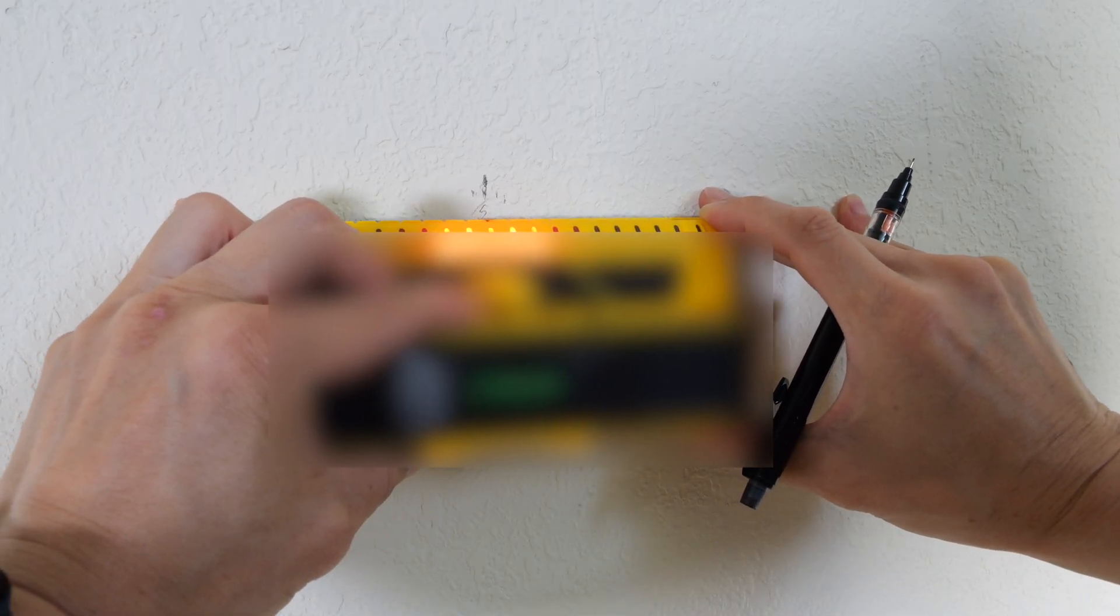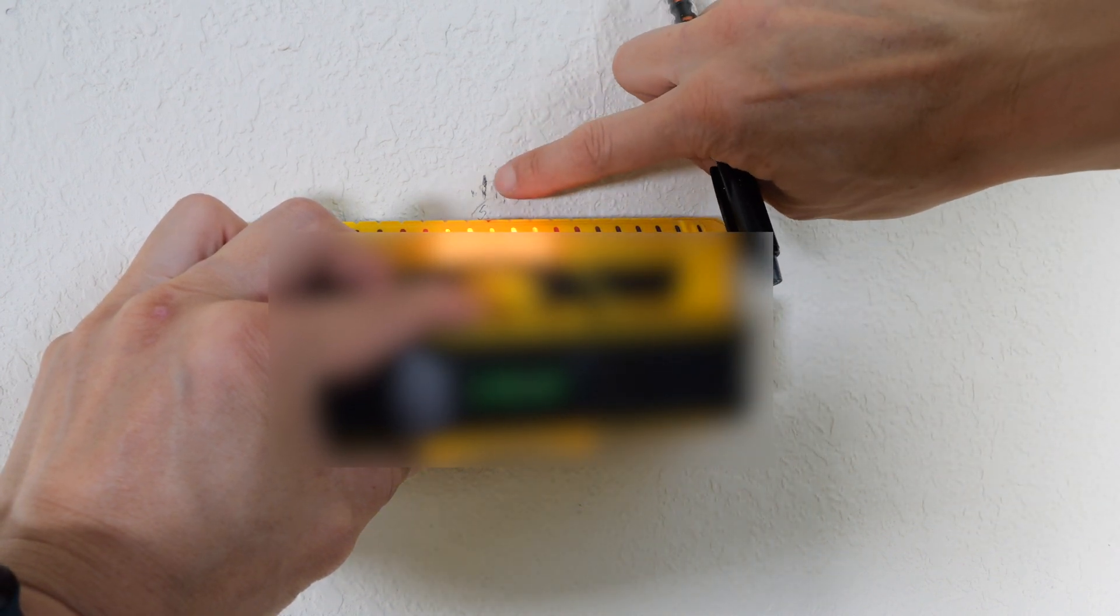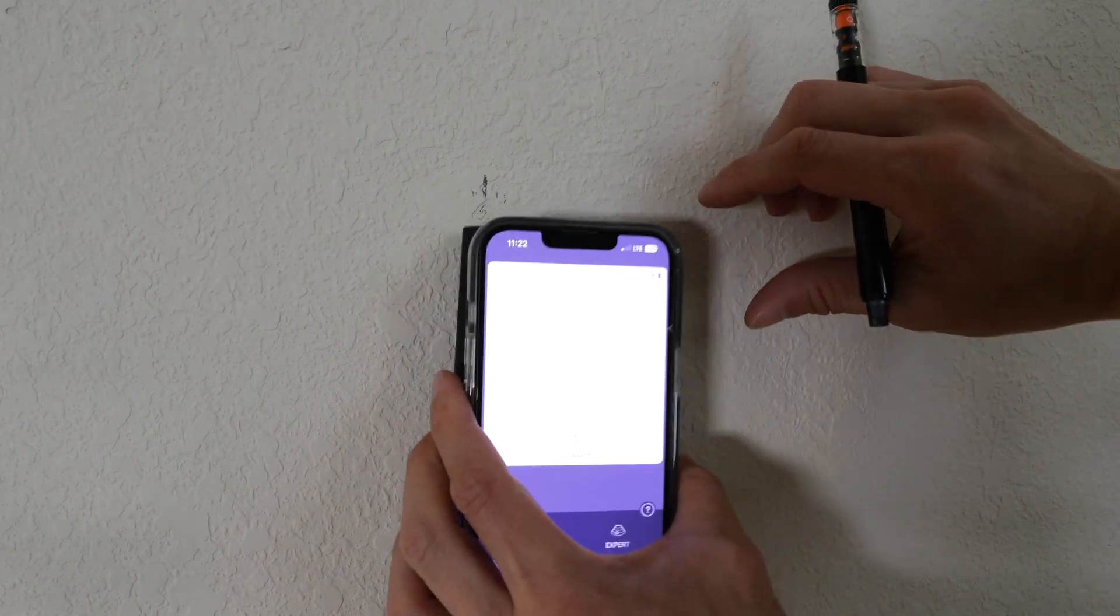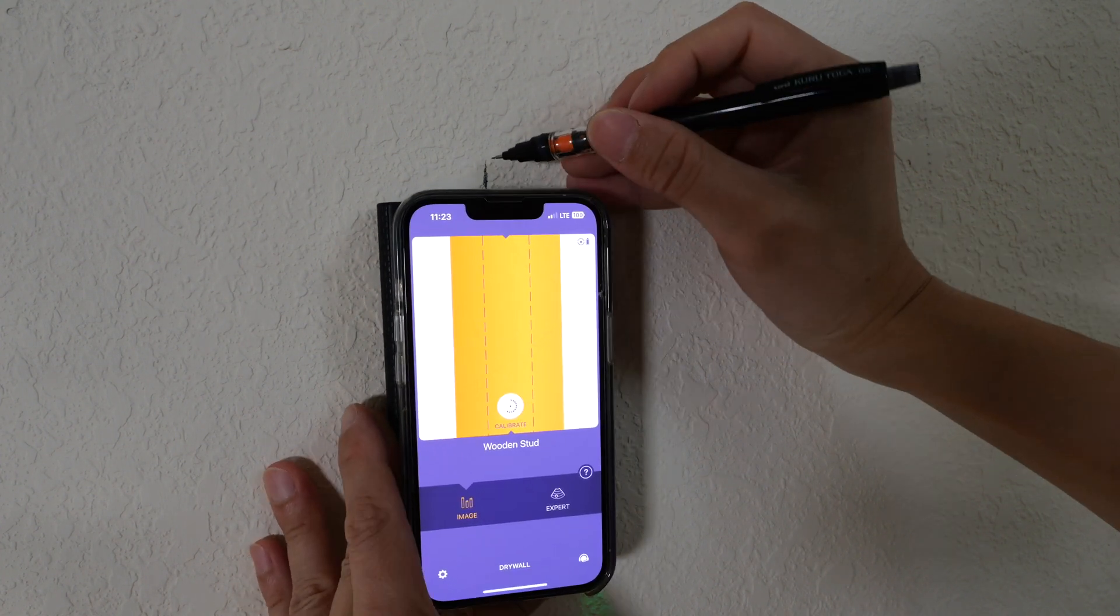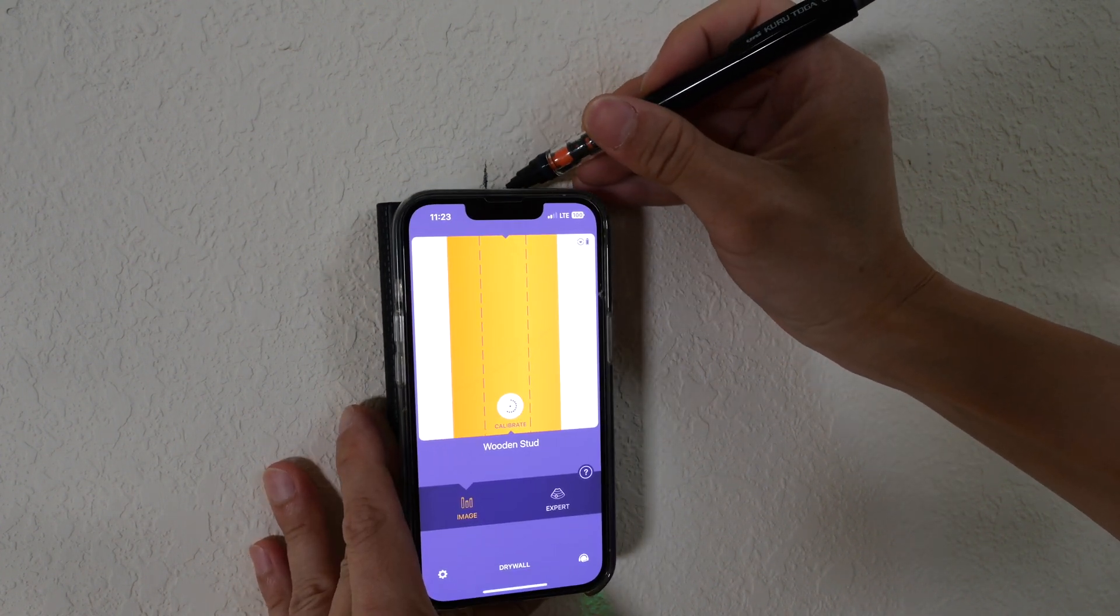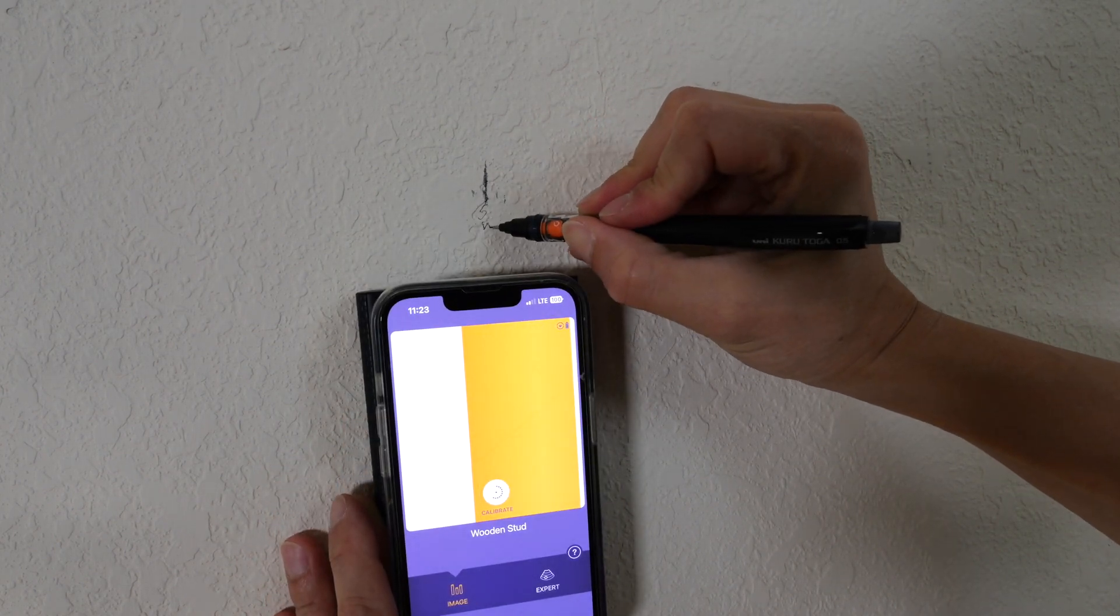Moving it around, I can see that the center should be right here, and I marked it S. Let's try with the Wallabot. This is the same wall, so I don't need to recalibrate. In this case, the stud finder and the Wallabot are in agreement, S and W.